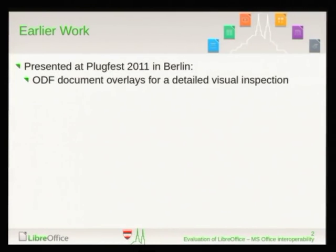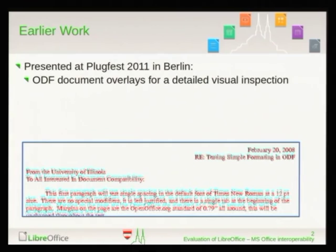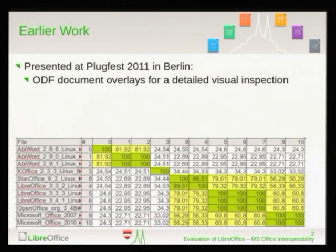I started some time ago. The first time I presented this topic was at Plugfest in Berlin. That time I did something very primitive — I just overlaid two documents. Differences are shown in color, and the common content is in black. This works for documents which are nearly identical; otherwise we get nonsense. The results were computed as a measure and presented as a Writer document.